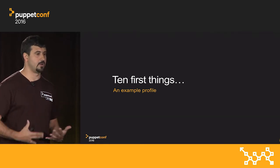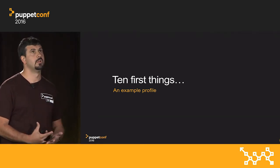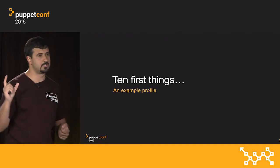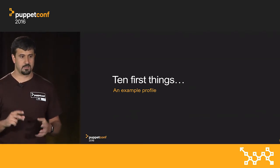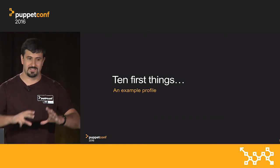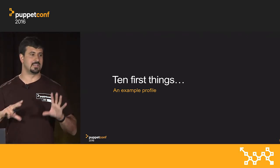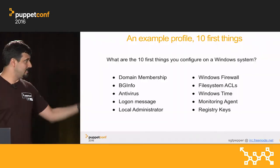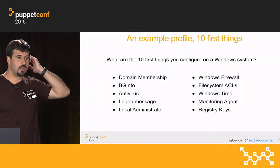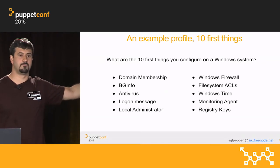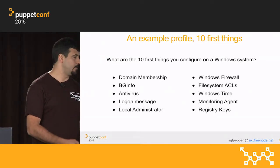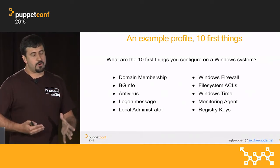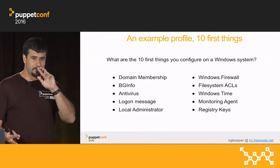When I started thinking about how to implement this talk, I went back to my Windows SysAdmin days and said, what are the 10 first things I configure in a Windows system? What are 10 things anyone can relate to and understand? So this is the list I came up with — it might be similar to yours, you might have more or less, but it's just to give you an initial idea of what 10 first things you can start configuring in a Windows system.